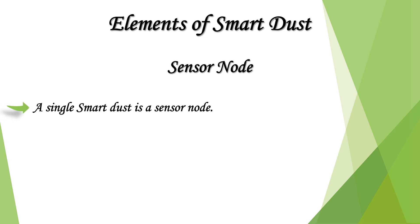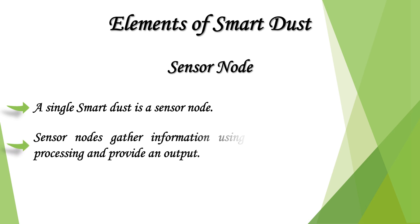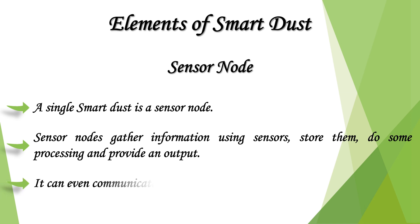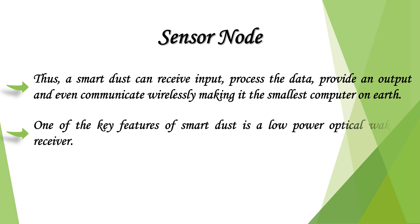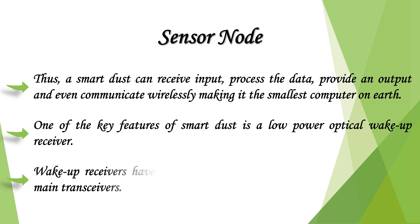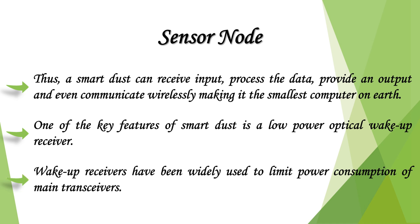A single smart dust particle is a sensor node. Sensor nodes gather information using sensors, store it, do some processing, and provide an output. It can even communicate wirelessly with other motes. Thus a smart dust can receive input, process data, provide an output, and communicate wirelessly — making it the smallest computer on earth. One of the key features of smart dust is a low-power optical wake-up receiver, which has been widely used to limit power consumption of main transceivers.